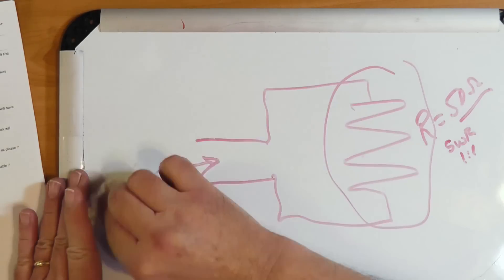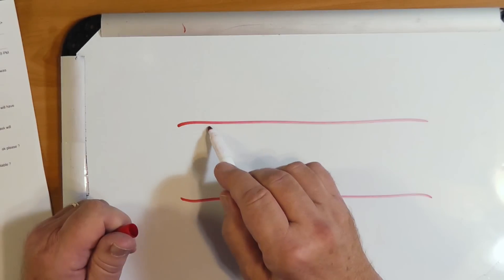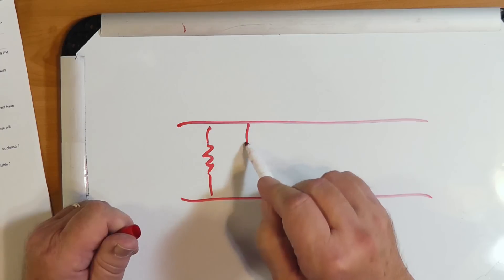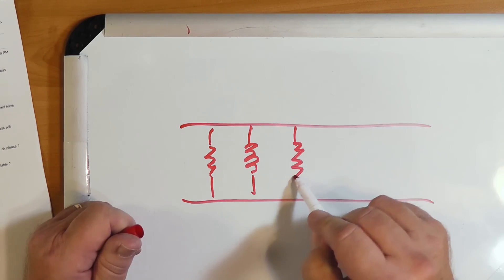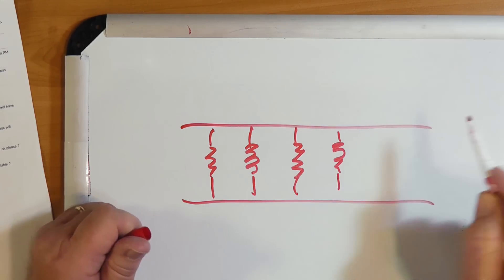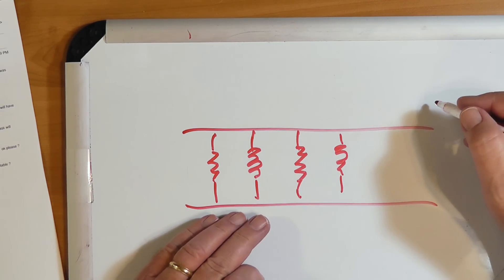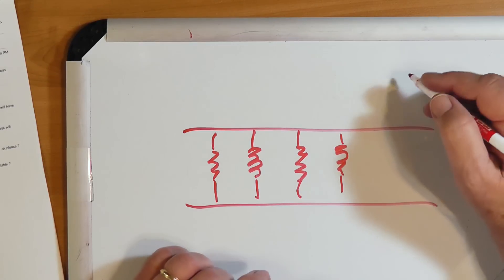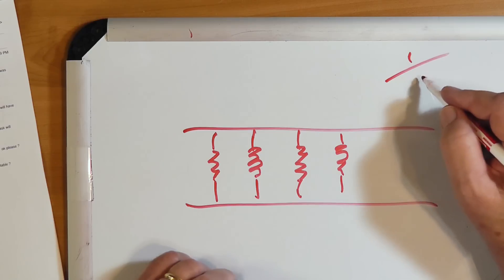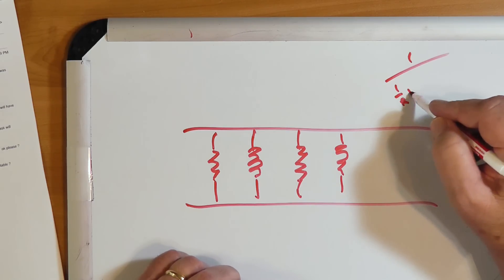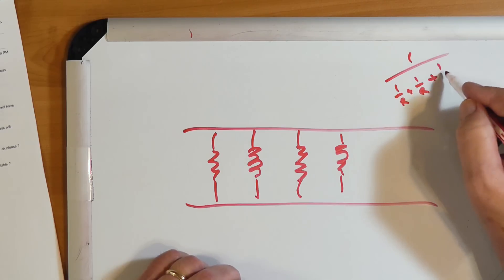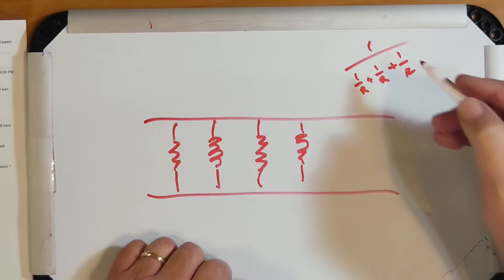What Rod has done is get ten 500-ohm resistors. If you put resistors in parallel and they're each 500 ohms, since they're all equal you end up dividing by 10. The formula is 1 over the sum of (1/R + 1/R + 1/R...) and so on.